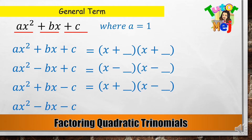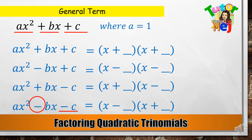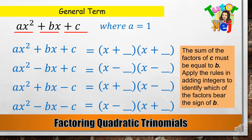AX squared minus BX minus C equals (X minus a factor of C) times (X plus another factor of C). Dito, negative ulit ang C, kaya magkaiba ang ating magiging sign of factors of C. Alin sa mga factors ng C ang magdadala ng sign sa gitna? Iyon ay yung mas malaking number — regardless of the sign, yung mas malaki ang magdadala ng negative sign. Tandaan: the sum of the factors of C must be equal to B. Then apply the rules in adding integers to identify which of the factors bear the sign of B.